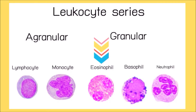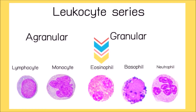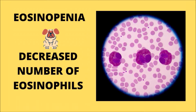The eosinophils belong to the group of granular leukocytes. Eosinopenia is the condition in which there is a decrease in the number of eosinophils in the circulating blood. The most common causes of eosinopenia are severe stress associated with illness and response to corticosteroid administration.